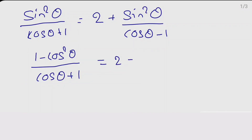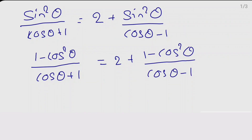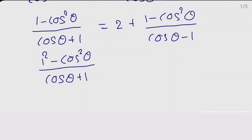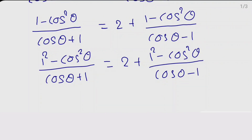This divided by cos θ plus 1 as it is. On the RHS side, 2 plus sin²θ, and sin²θ we can write as 1 minus cos²θ, divided by cos θ minus 1 as it is. Now 1 we can write as 1², so 1² is also 1, and minus cos²θ divided by cos θ plus 1. On the RHS: 2 plus 1² minus cos²θ divided by cos θ minus 1.